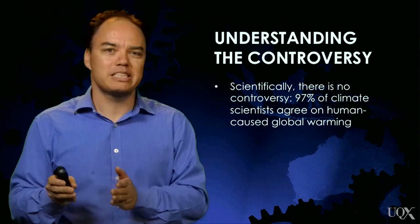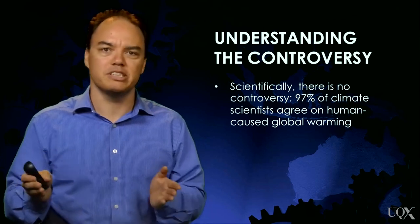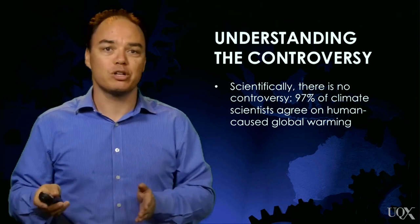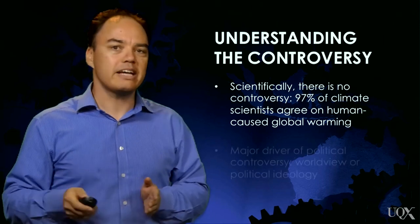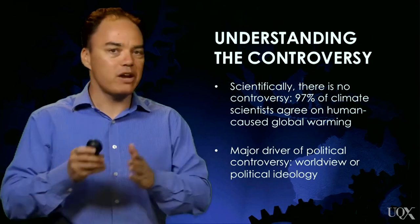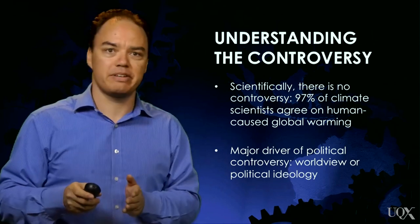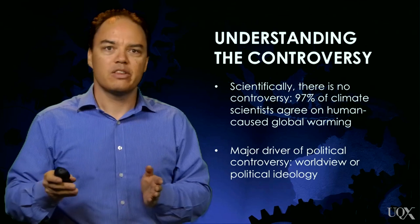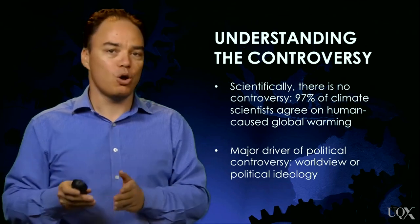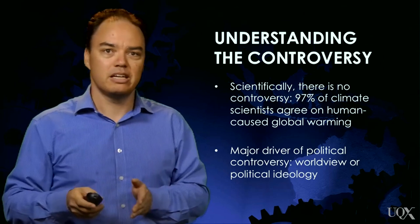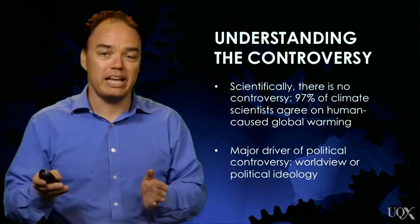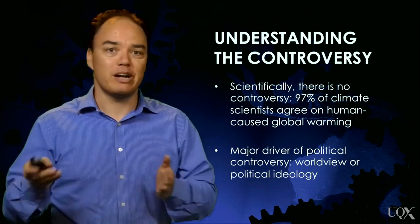First, you need to understand that there isn't a scientific controversy. Ninety-seven percent of climate scientists agree that humans are causing global warming. Second, you need to understand how and why people reject the scientific consensus. The major driver of climate science denial is people's worldview or political ideology. Confirmation bias leads people to reject threatening evidence and accept friendly evidence.